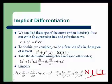So let's consider an example. Suppose we can write a curve in terms of x and y, but not necessarily solve for y as a function of x. For example, if we have x³ + y³ = 6xy. So what we do is we consider y to be a function of x in the region of interest. So every time we have a y, we can write it as y(x). So we get x³ + y(x)³ = 6x·y(x).